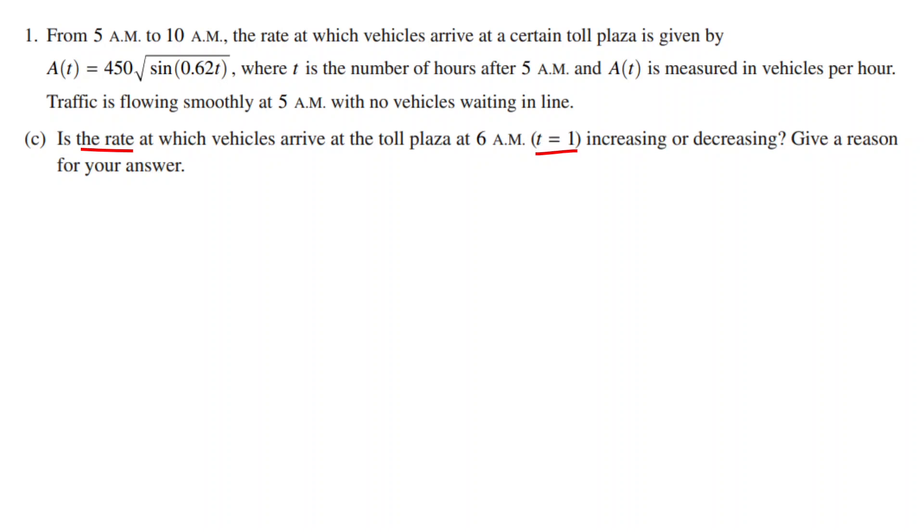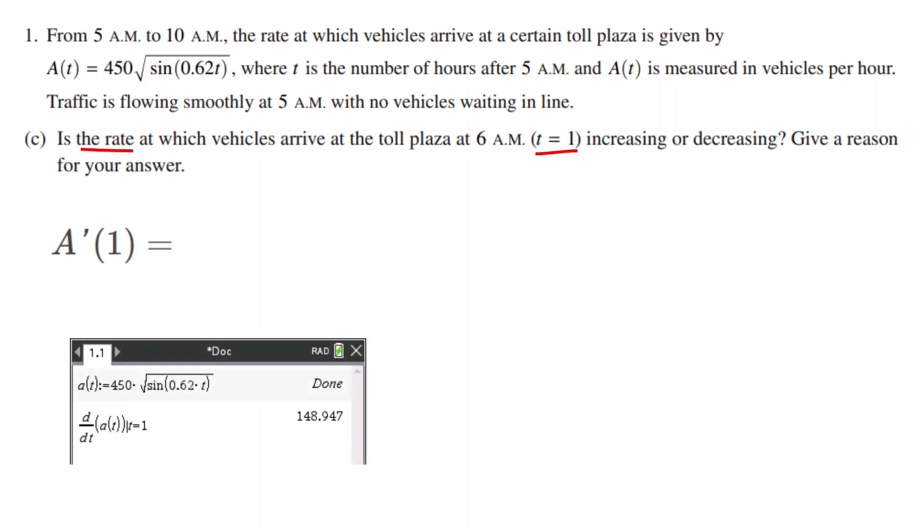To find if a function is increasing or decreasing at a point, we take the derivative of the function at that point. For this problem, we need A prime of 1. We plug this into our calculator and we get 148.947. This number is positive, meaning that the rate is increasing.